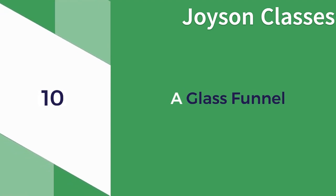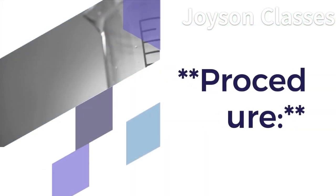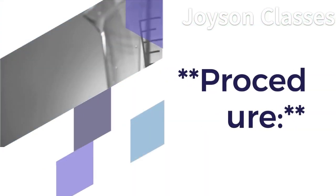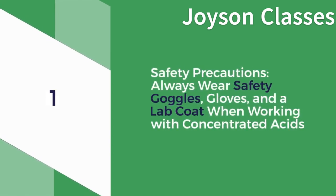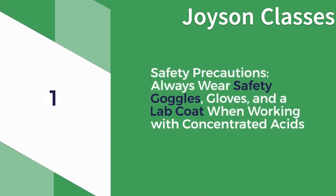Procedure: 1. Safety Precautions — always wear safety goggles, gloves, and a lab coat when working with concentrated acids.